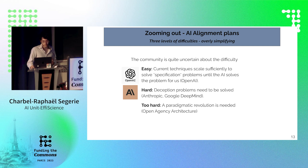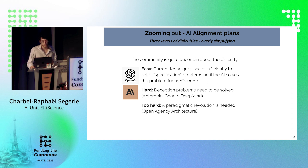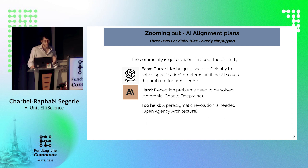Let's zoom out a little bit. The community is quite uncertain about the difficulty of these problems. OpenAI thinks the problem is quite easy because they think current techniques scale sufficiently to solve those problems until the AI solves the problem for us. But OpenAI is not the only ones — there are also Anthropic and Google DeepMind, who think that deceptive alignment is another class of failure mode which needs to be solved for powerful AIs. And some people think the problem is too hard with monolithic deep learning and we need a paradigmatic revolution.